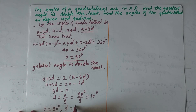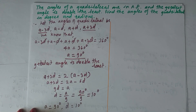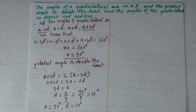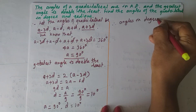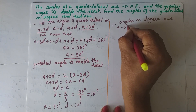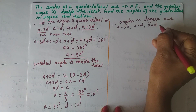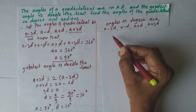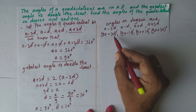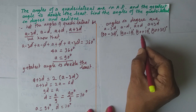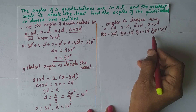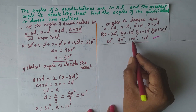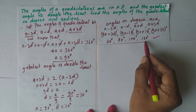We have a = 90° and d = 10°. The angles in degree are: a−3d = 90°−30° = 60°, a−d = 90°−10° = 80°, a+d = 90°+10° = 100°, and a+3d = 90°+30° = 120°.